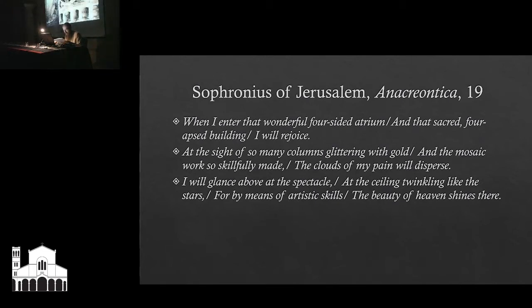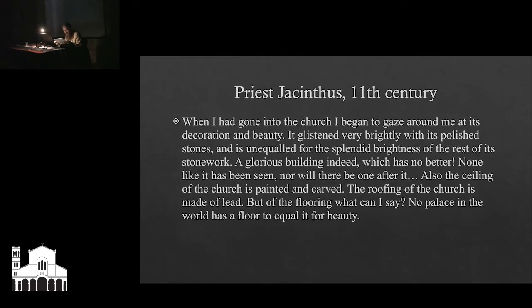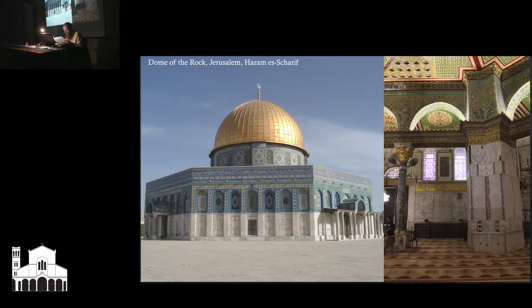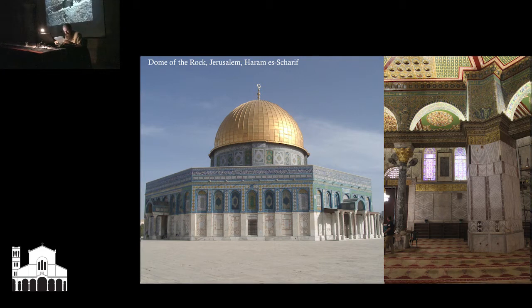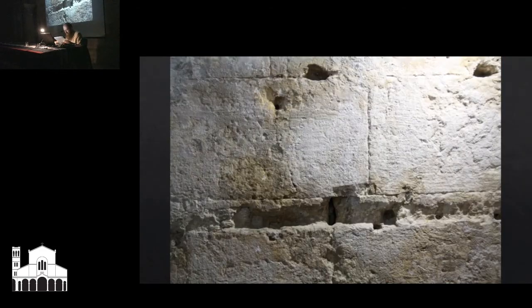This enables us to understand that the glittering effect of the church interior evoked in Patriarch Sophronius' anacreonic poetry was not just rhetorical exaggeration. According to Sophronius, the interaction of gilded surfaces, mosaics, and the ceiling twinkling like stars contributed to arouse the viewer's astonishment. Something of such precious decors was still well detectable in the 11th century when Jacinthus visited the church and was especially struck by the beauty of its marble revetments on both the walls and the floor. We can figure out that in Byzantine times the church may have looked like the interior of Jerusalem's Dome of the Rock, whose marble slabs may have partly come from Bethlehem if we are to believe some 16th century sources reporting that Sultan Suleyman the Magnificent ordered them removed and employed in the Haram.